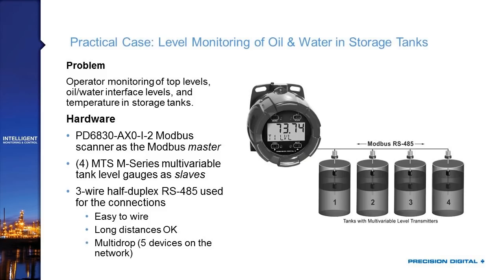Here's a practical case study. An operator wants to monitor the top level, the oil-water interface level, and the temperature of liquid stored in storage tanks — at a transfer terminal or separator facility. Oil and water mix and then separate when left to settle. They're going to use a PD6830X Modbus Scanner as their master device — the only display device needed for this setup — and four MTS M-Series multivariable tank level gauges as slave devices.